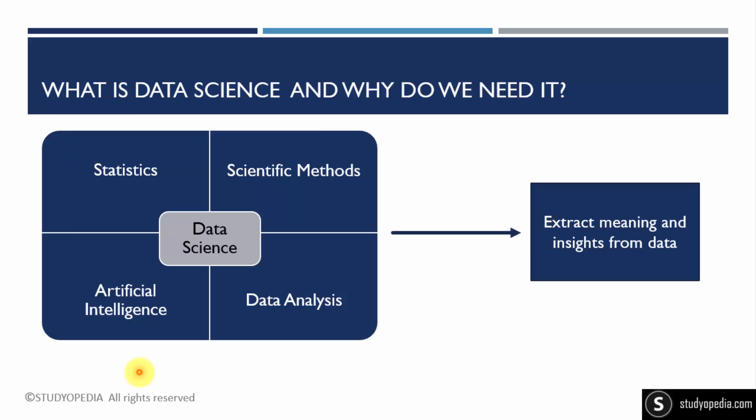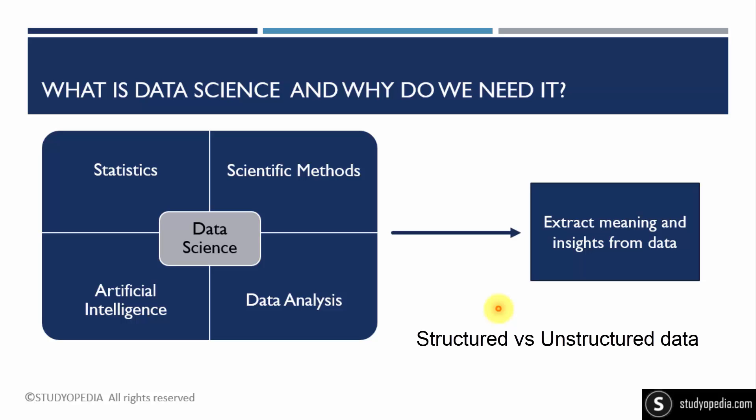What is data science and why do we need it? There is structured as well as unstructured data. Structured data includes rows and columns in tables, which we have been creating for a long time. Unstructured data includes data from social media, images, videos, and CCTV footage. To manage this unstructured data, big data emerged, and then data science came to understand that data and get useful insights from it.